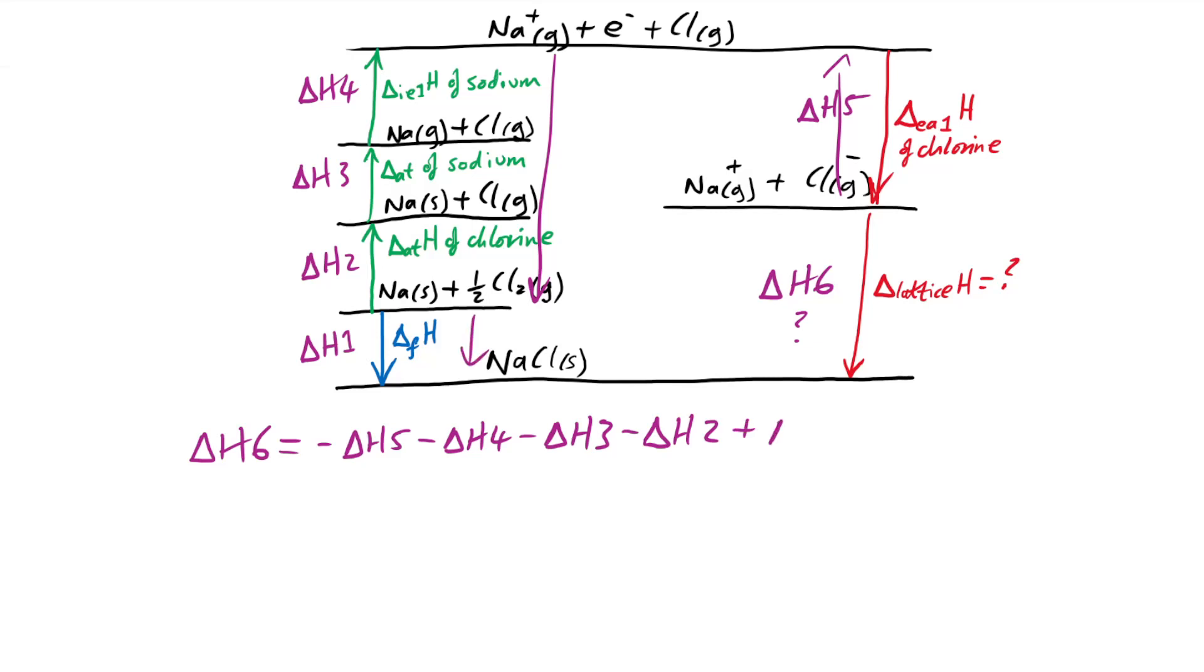So let's say that we know all of these numbers. You've got to be careful with your positives and negatives. All of these numbers are going to be in kilojoules per mole. And I end up with minus 787 kilojoules per mole. So that means that the lattice enthalpy of formation for sodium chloride is minus 787 kilojoules per mole.